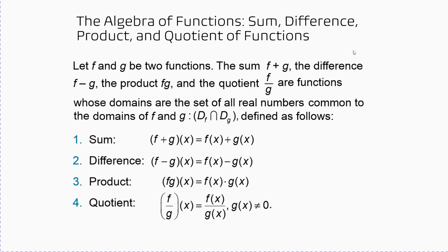The operations are defined as follows: (f+g)(x) means take f(x) and add it to g(x). (f-g)(x) equals f(x) minus g(x). (f·g)(x) is just f(x) times g(x). And (f/g)(x) is just f(x) divided by g(x). Let's work some examples where we perform these four algebraic operations on functions.